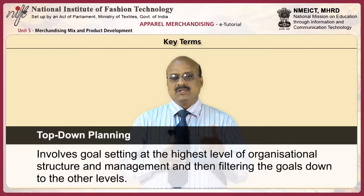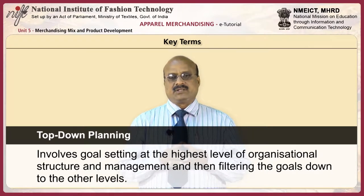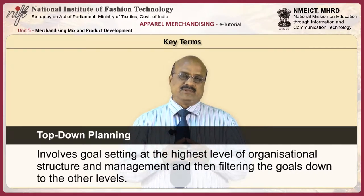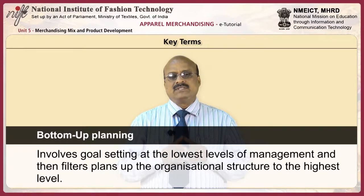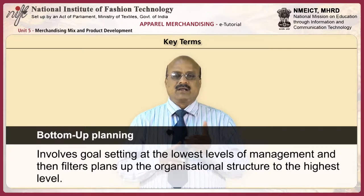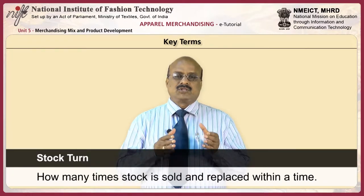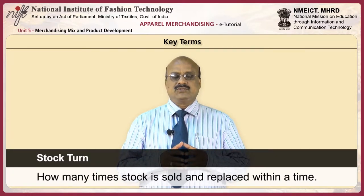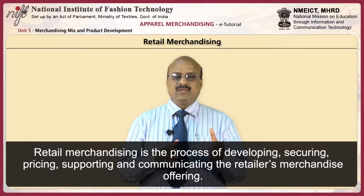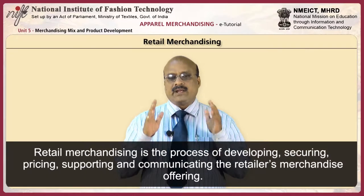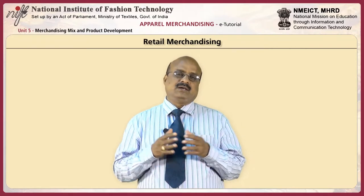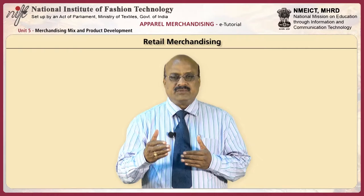Top down planning involves goal setting at the highest level of the organization structure and management and then filtering the goals down to the other levels. Bottom up planning involves goal setting at the lowest levels of management and then filters plans up the organizational structure to the highest level. Stock turn is the number of times stock is sold and replaced within a period. Retail merchandising is the process of developing, securing, pricing, supporting and communicating the retailer's merchandise offering — meaning offering the right product at the right time at the right price with right appeal.